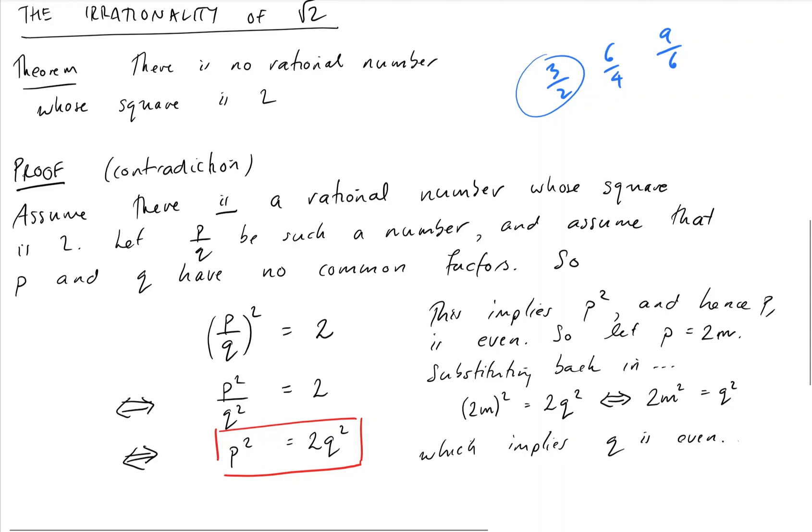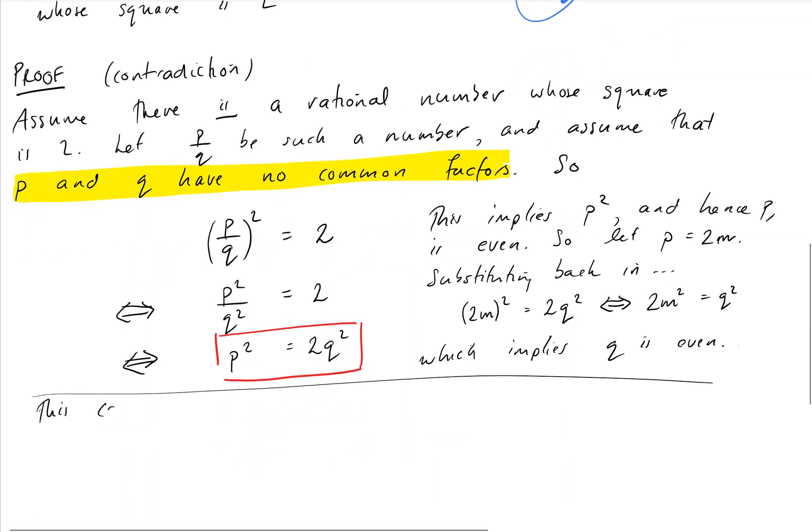So now we have found our contradiction. Because we went ahead and we assumed that p and q have no common factors, that certainly means that p and q cannot both be even. We have just shown that they must be. Therefore, such a p divided by q does not exist. So this contradicts p and q having no common factors. So we have obtained a contradiction, and the theorem is true.